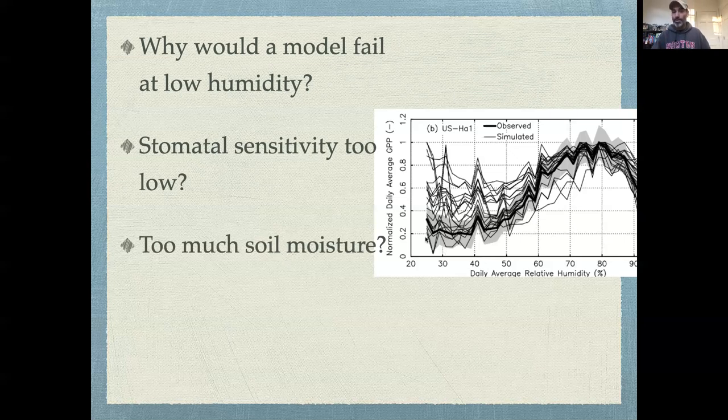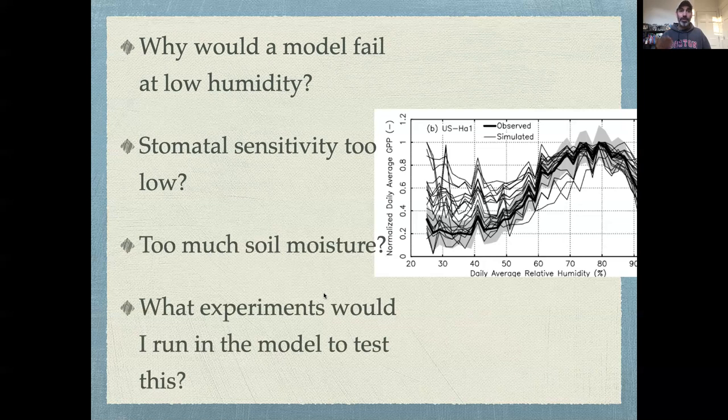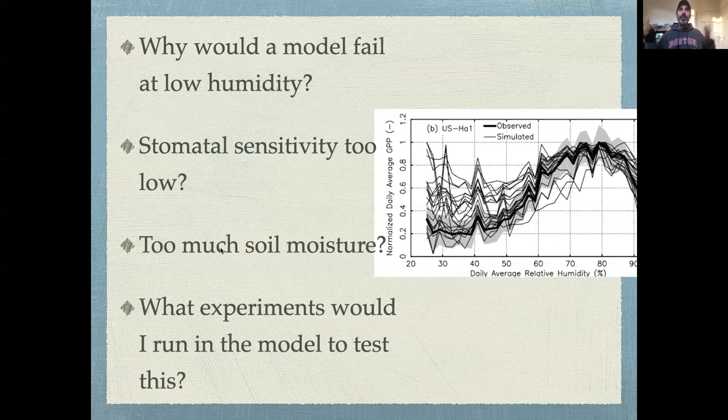The question would then be: what experiments would I run to test the model's hypotheses? What would disambiguate those two hypotheses? It might be creating variants in the model where I change the stomatal sensitivity, or manipulate the soil moisture or parameters that control soil moisture. I would try to isolate problems and test hypotheses, and that isolation is a real key part.